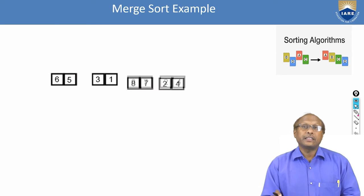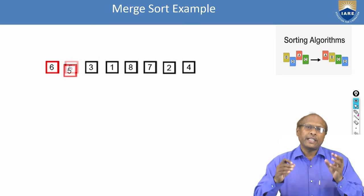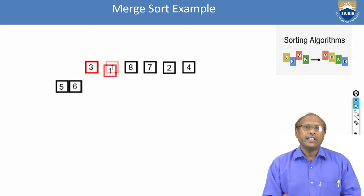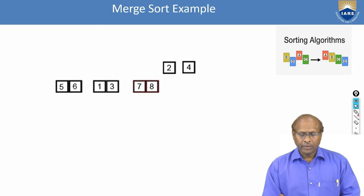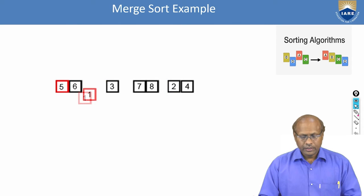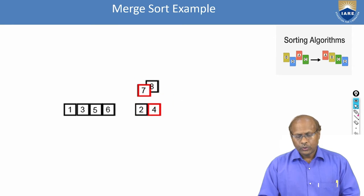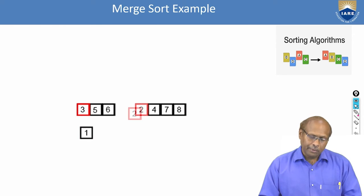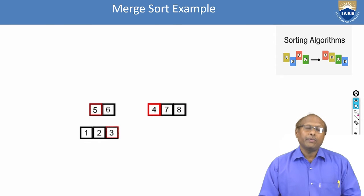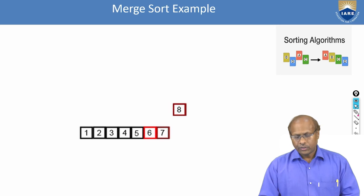So the initial process is division, because this algorithm follows divide and conquer policy. It divides until each group contains only single elements. Once the groups contain single elements, it will start merging the whole group in ascending order. Then these two broad groups will be combined into a single final group. While merging, it will check the smallest element first because it is going in ascending order. If you want descending order, then you find the biggest element first.